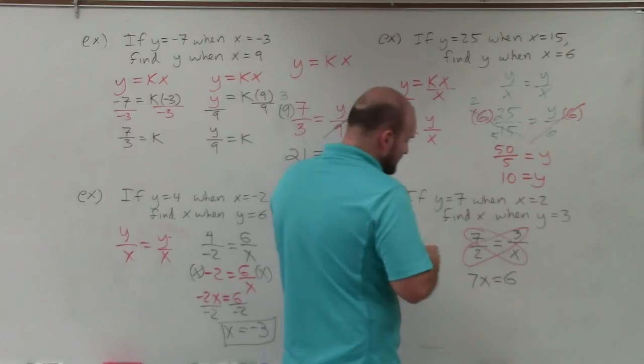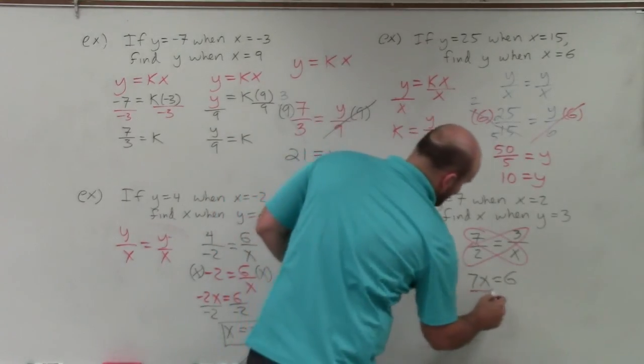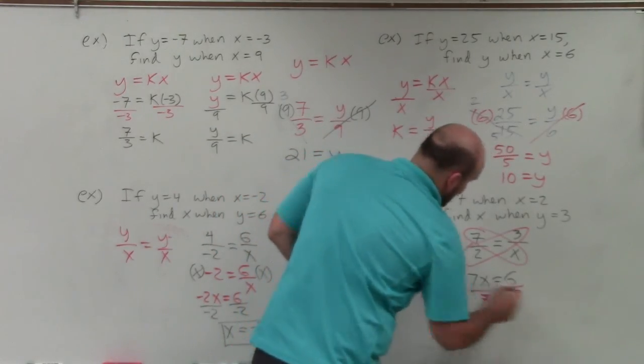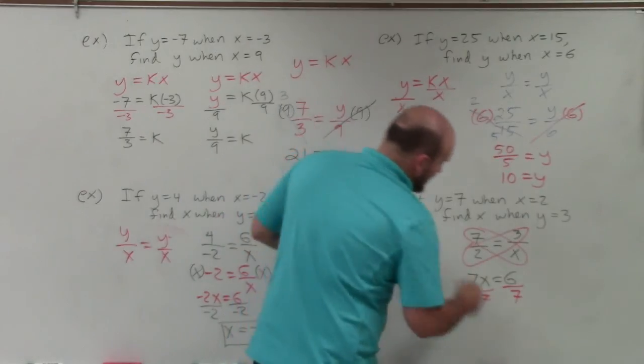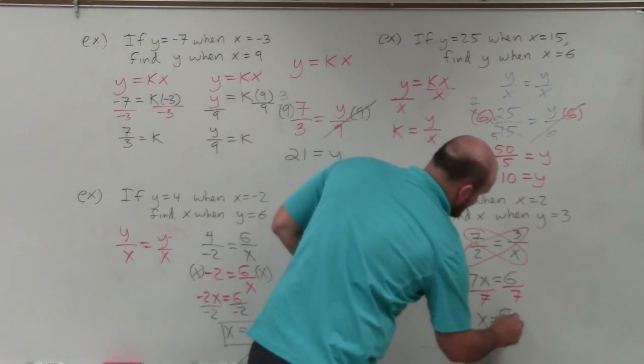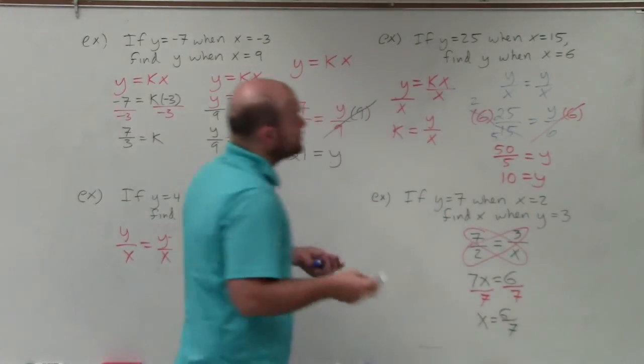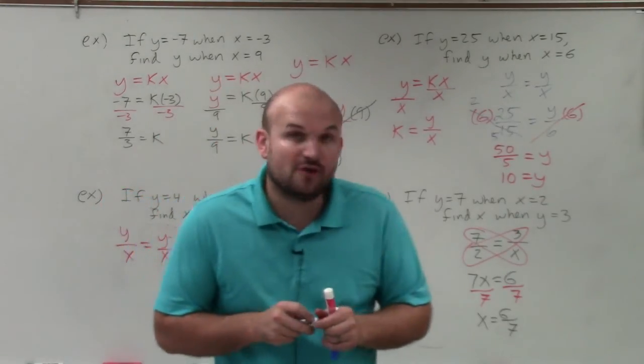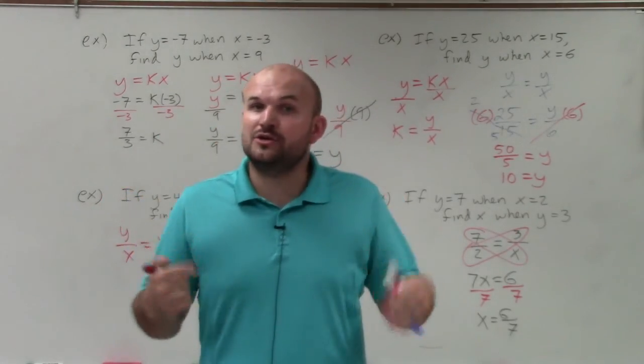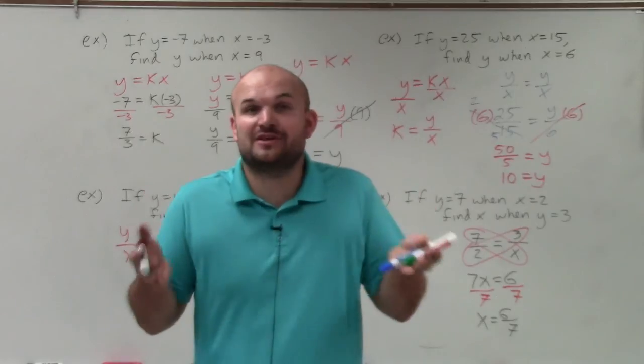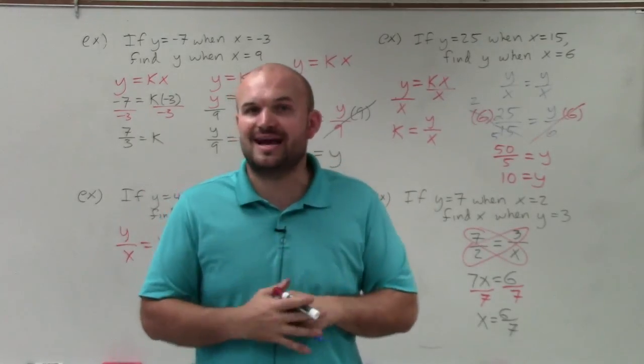Now you solve. My variable's being multiplied by 7, so I divide by 7 on both sides, and what I obtain is x equals 6 over 7. So there you go, ladies and gentlemen. That is how you solve for x and for y when you are presented with values where y varies directly with x. Thanks.